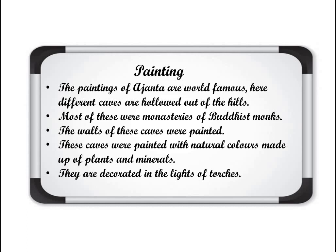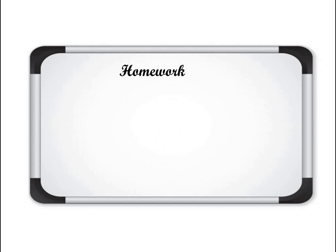So this is all about the paintings in the chapter. With paintings and buildings we have completed today's topics. Under buildings we covered the Iron Pillar, Stupa, and Temple. I hope these two topics — buildings and paintings — are clear to you. Now it is time for homework.